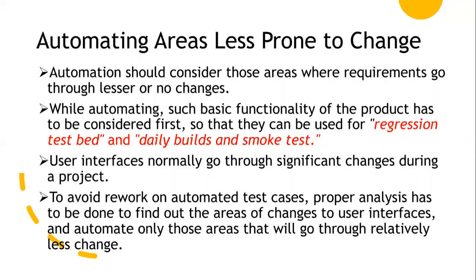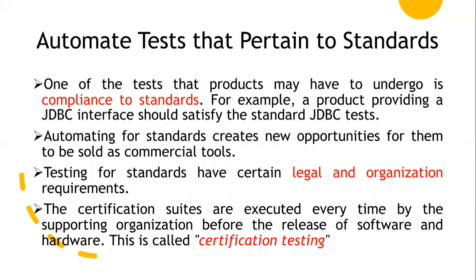Next considerations are user interfaces and non-user interfaces, and automated tests that pertain to standards. Products we develop should be compliant to standards — for example, providing ODBC or JDBC. They should satisfy an ODBC or JDBC test. Automated test suites should be developed for the product. These come in the form of a set of tools that are sold commercially. For testing these standards — which include legal and organizational requirements — in order to certify the software or hardware before release, this process is called certification testing, which can be done by certification suites. Next is management aspects in automation: management mainly focuses on return on investment. We should concentrate on areas with high permutation and combination for automation, and automate test cases in less time and in an easy manner to get investment for automation.